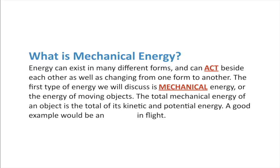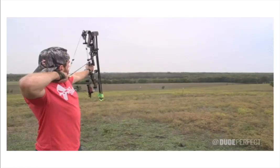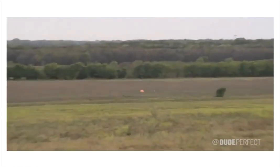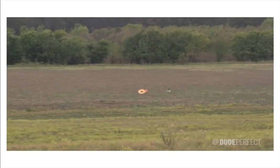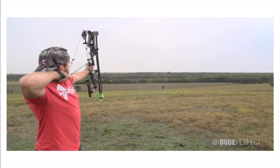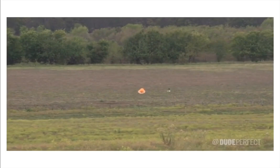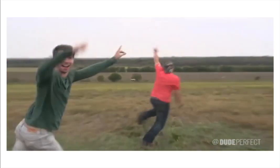A good example is that of an arrow in flight. We can ask our good friends at Dude Perfect — for about 301 yards, about 280 to 290 meters, he shoots the arrow. The arrow flies through the air. It has mechanical energy. Whenever they pull back on the bow, you have elastic potential energy, and that's transferred to the arrow as it flies through the air. It has the mechanical energy as it's moving.